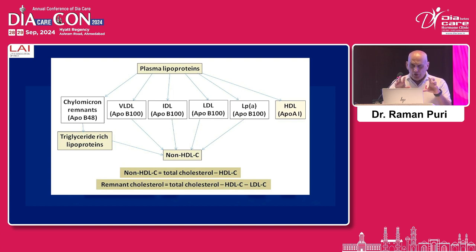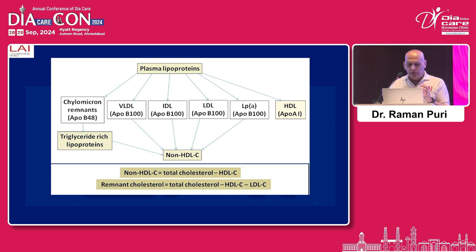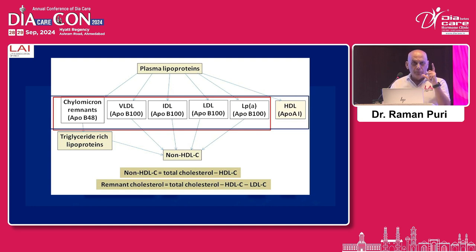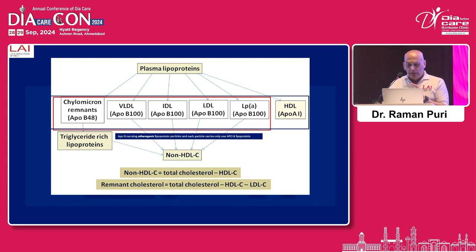I'll talk about some basics to help you understand the good, bad, and ugly lipoproteins. There are six prominent main lipoproteins in circulation. Five of them carry ApoB — we call these ApoB-containing lipoprotein particles, which are said to be atherogenic particles. Each atherogenic ApoB particle contains only one ApoB, so the number of ApoB in circulation tells you how many atherogenic particles are present.